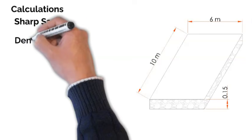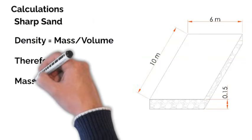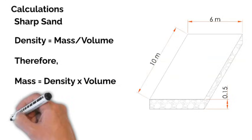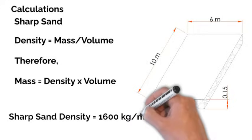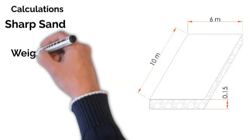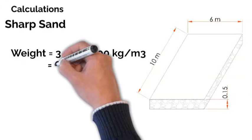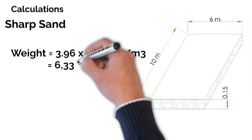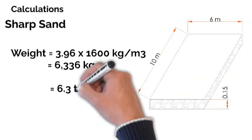Similarly, the weight equals density by volume, with sand having a density of 1600 kilograms per cubic meter. Therefore, the weight is 3.96 times 1600, which equals 6336 kg, or about 6.3 tons.